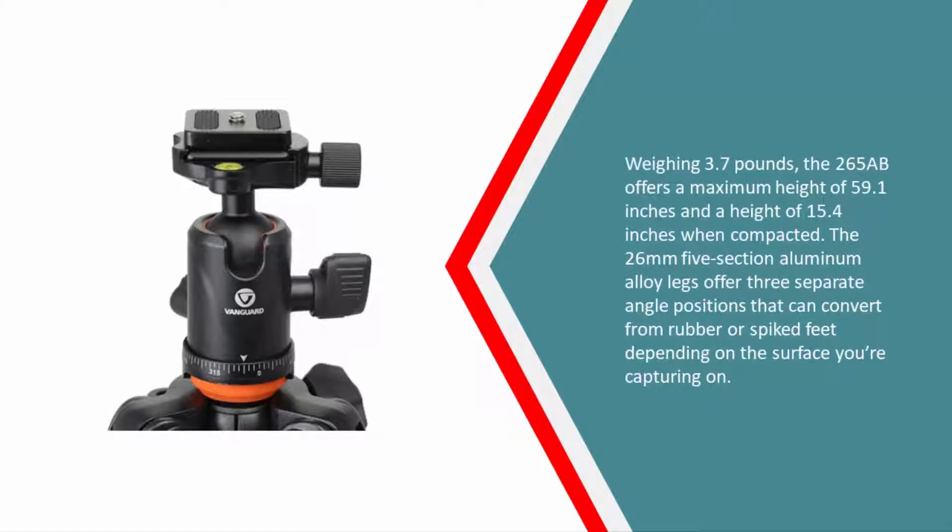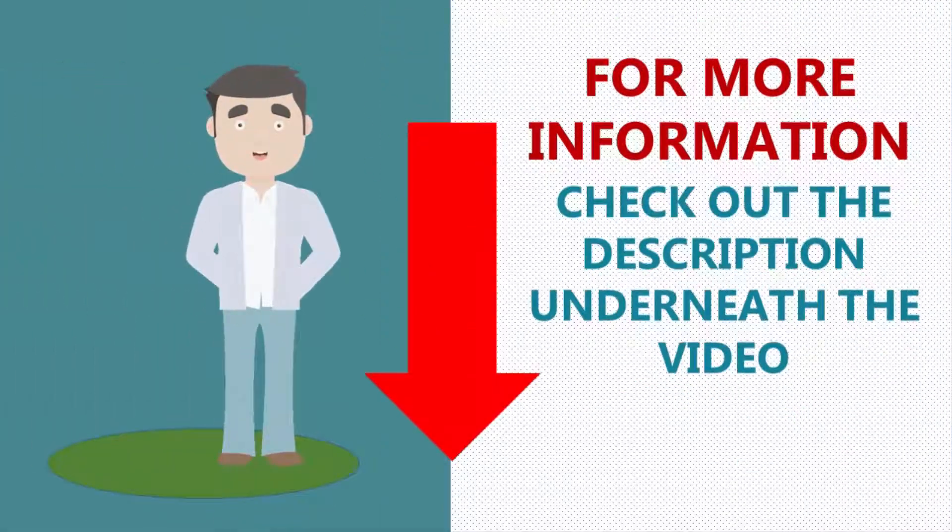The 26 millimeter five-section aluminum alloy legs offer three separate angle positions that can convert from rubber or spiked feet depending on the surface you're capturing on. For more information, check out the description underneath the video.